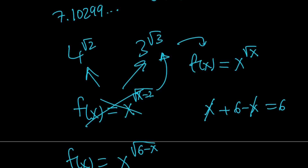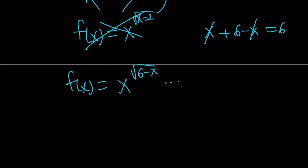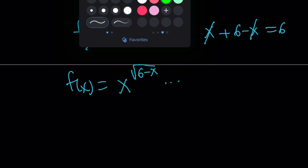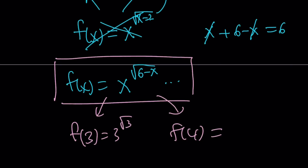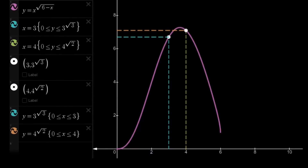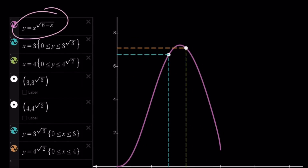The derivative of this function is messy, so we're just going to take a look at the graph. This is by no means a solution — it's not an approach or a method. Looking at the graph of f(x) = x to the power square root of (6 minus x), at x = 3 we get 3 to the power root of 3, and at x = 4 we get 4 to the power root of 2. Clearly, 4 to the power root of 2 is greater. Obviously that's not a solution — it's just a graph.